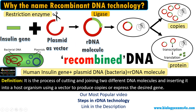Here we have inserted the human insulin gene, so our intention is to make insulin protein inside bacteria. Bacteria act just like biofactories producing insulin. We now have recombinant insulin, which is called humulin, produced by this technology.